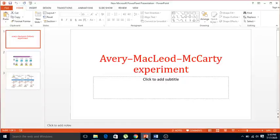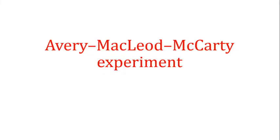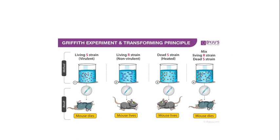Welcome back. In this video we are going to talk about the Avery, MacLeod and McCarty experiment. In the last video I told you about the Griffith experiment and the transforming principle. Griffith was working with pneumococcus bacteria, and what he observed was that when he mixed the live R strain and the heat-killed S strain and injected this into the mouse, the mouse died.